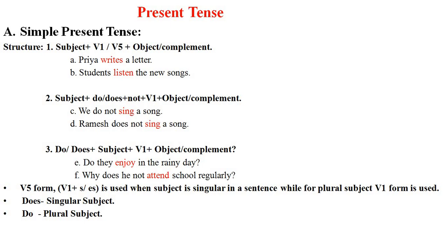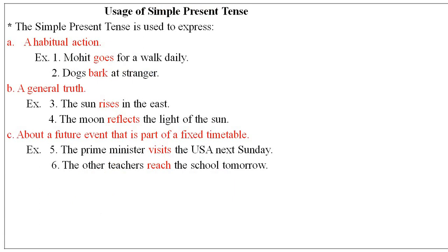The fifth form — that means first form plus 's' or 'es' — is used when the subject is singular. For a plural subject, the first form of the verb is used. 'Does' is used for singular subject and 'do' is used for plural subject. Simple present tense is used to express a habitual action, for example: 'Mohit goes for a walk daily' and 'Dogs bark at strangers.' It is also used for general truths, such as 'The sun rises in the east' and 'The moon reflects the light of the sun,' and for future events that are part of a fixed timetable, such as 'The prime minister visits the USA next Sunday' and 'The other teachers reach the school tomorrow.'